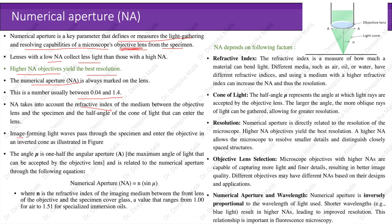Image-forming light waves pass through the specimen and enter the objective in an inverted cone. The angle nu is one half the angular aperture, denoted by A — the maximum angle of light that can be accepted by the objective lens. Numerical aperture is given by: NA = n × sin(nu), where n is the refractive index of the imaging medium between the front lens of the objective and the specimen cover glass, ranging from 1 for air to 1.51 for specialized immersion oils. The refractive index measures how much a material can bend light; using a medium with a higher refractive index increases the numerical aperture and thus the resolution.